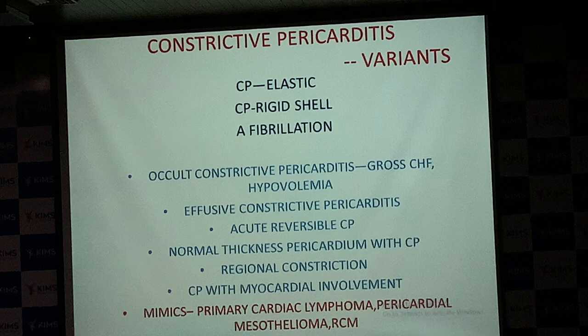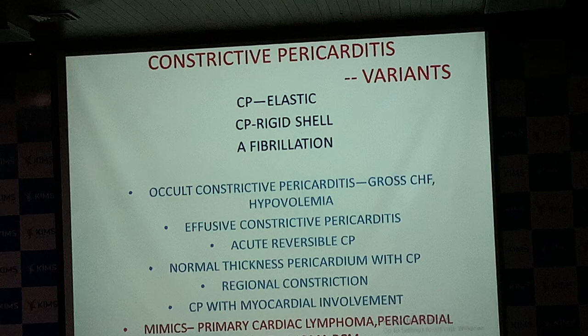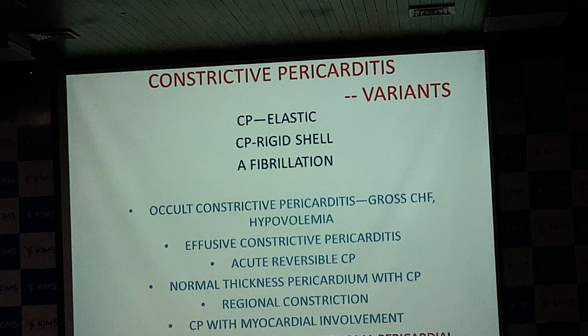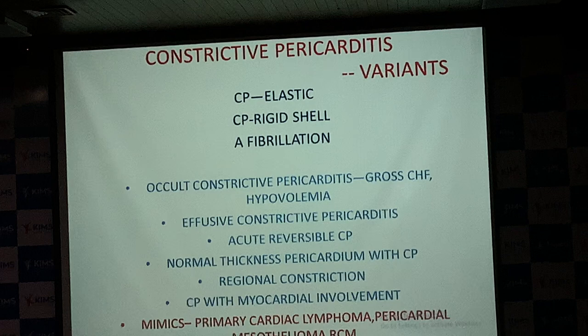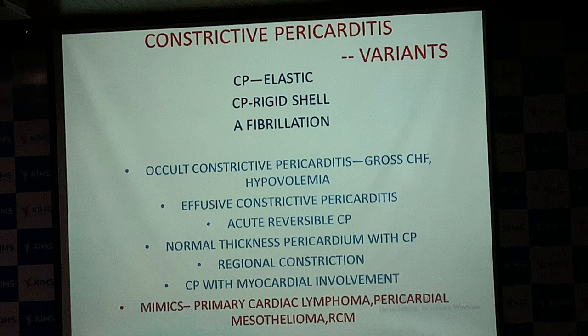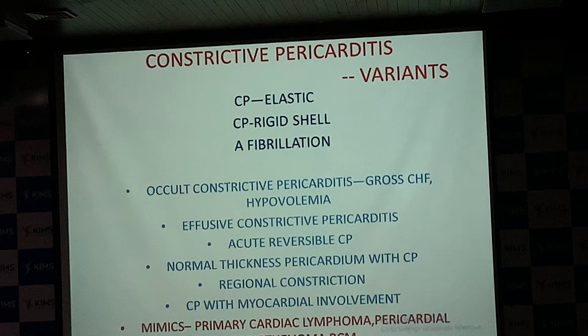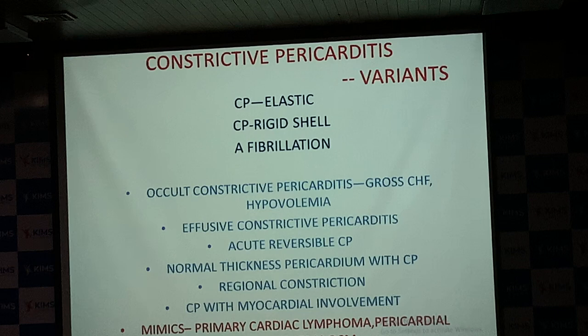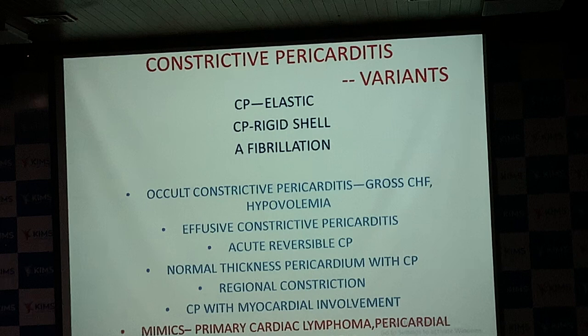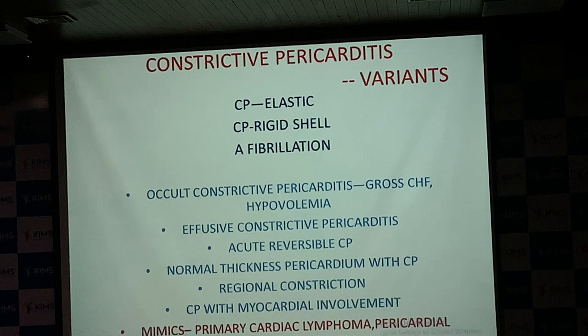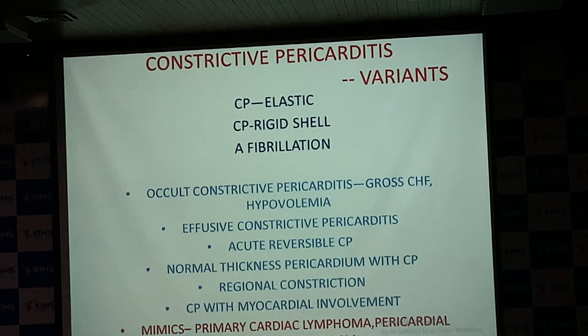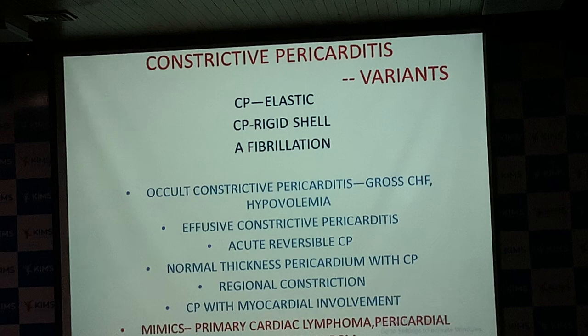Occult constrictive pericarditis: no echocardiographic signs but constrictive pericarditis is present — occurs with hypervolemia like congestive heart failure or with hypovolemia. To bring it out: if CHF, give diuretics or examine in standing position; if hypovolemia, give a fluid challenge and repeat Doppler parameters or invasive pressures. Effusive constrictive pericarditis is fairly common at about 12–15%; diagnosis is confirmed only after fluid removal when RA pressure remains elevated.